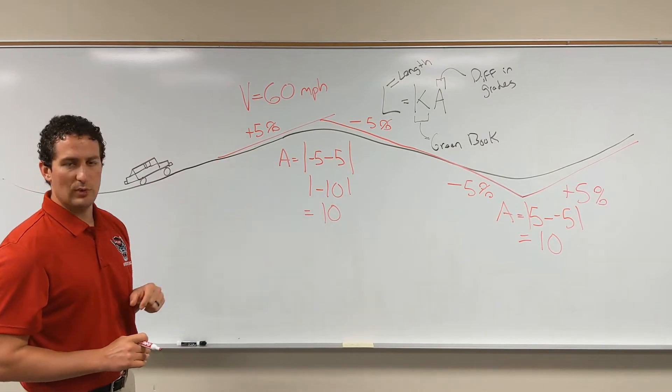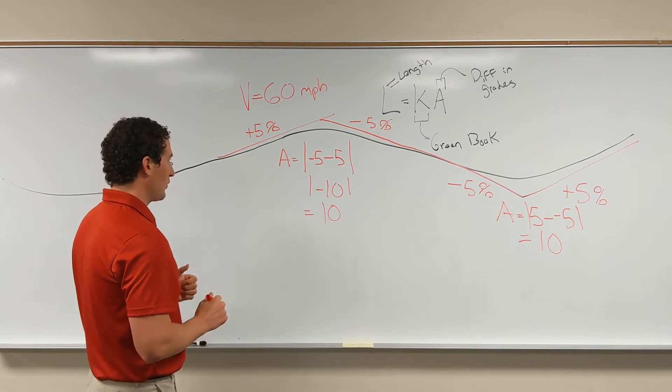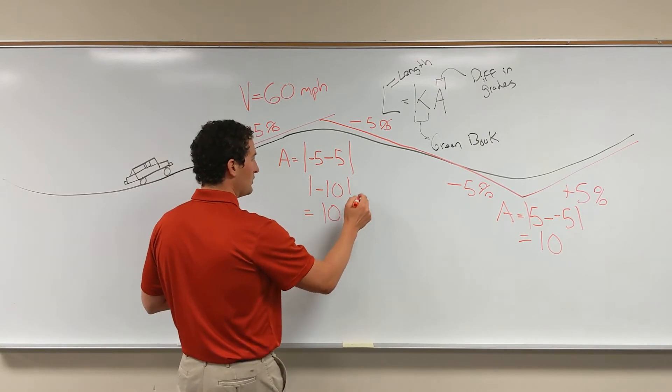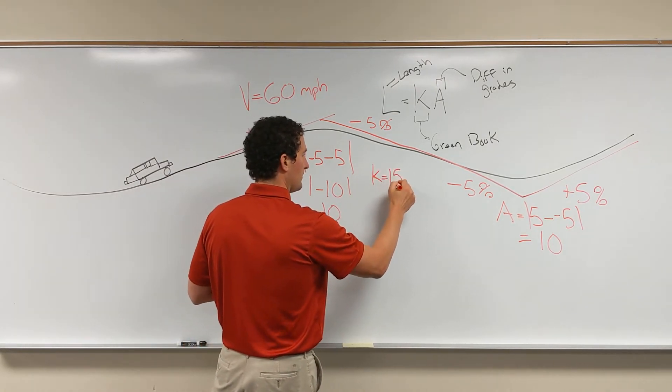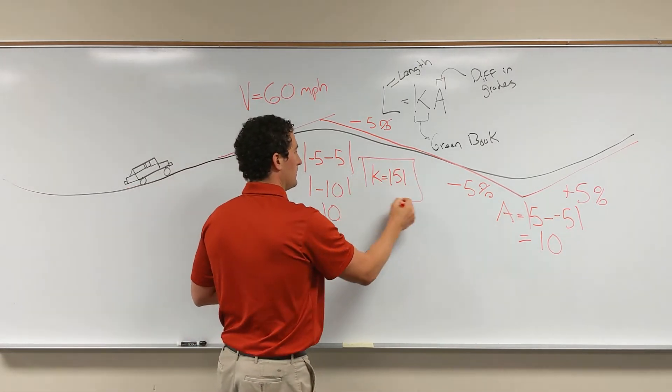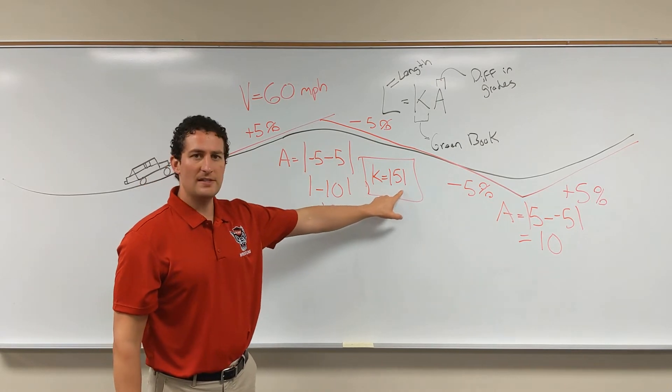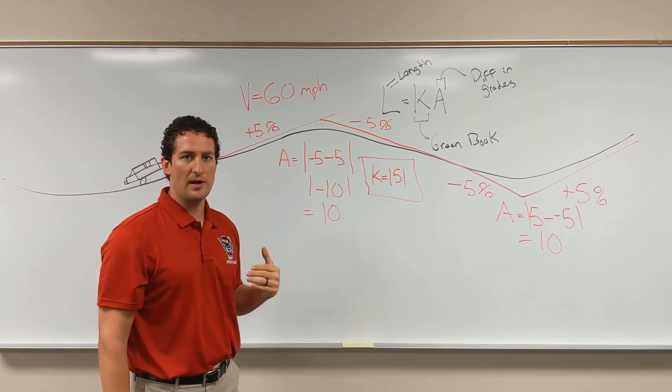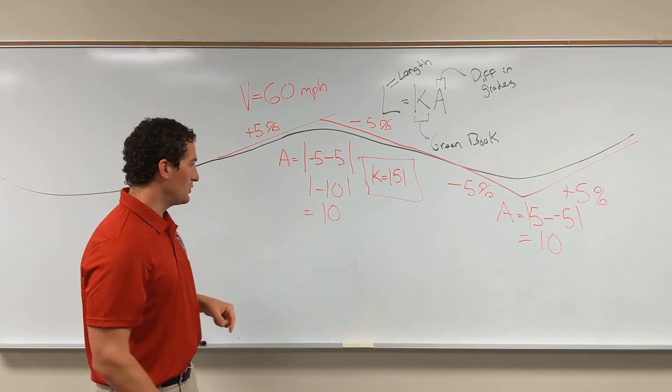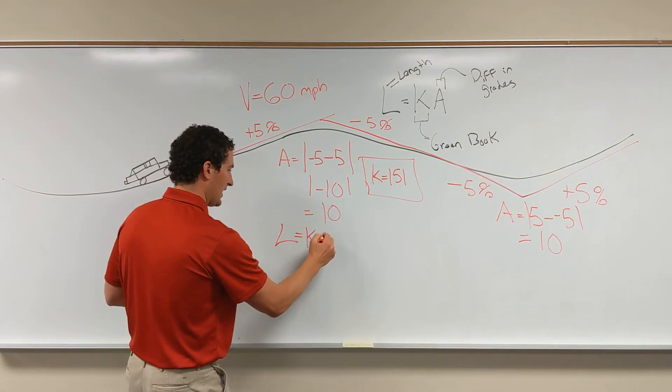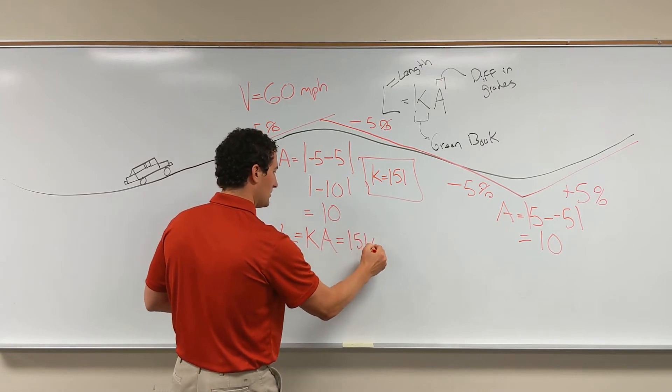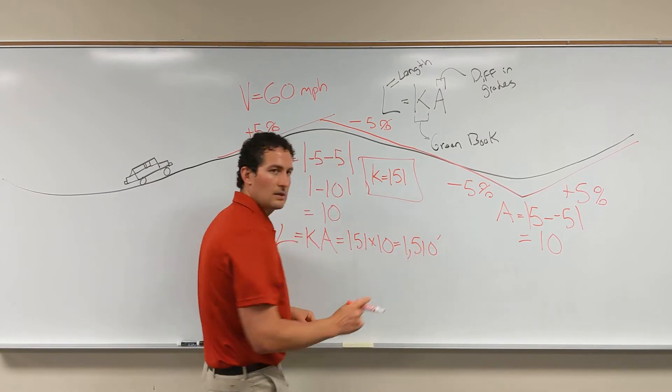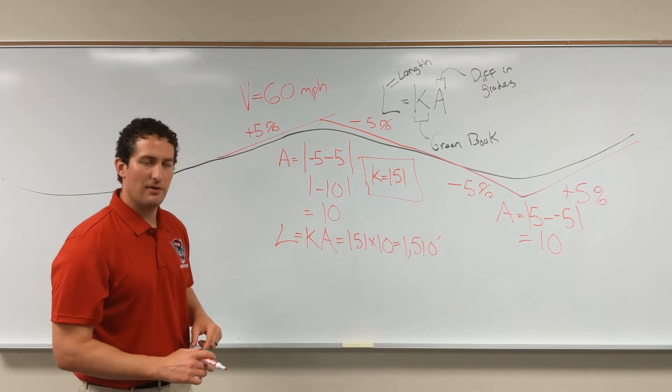L is going to be K times A, so we need to know K. From the Green Book, we can look up and find that for a crest curve at 60 miles per hour has a K of 151. And what that K represents is you need 151 feet, when we're dealing with English units, to accommodate a change in grade of 1%. And that's why we're going to multiply these two together. So L equals K times A. The K is 151. The A is 10. So the minimum length of curve for this curve is 1,510 feet.